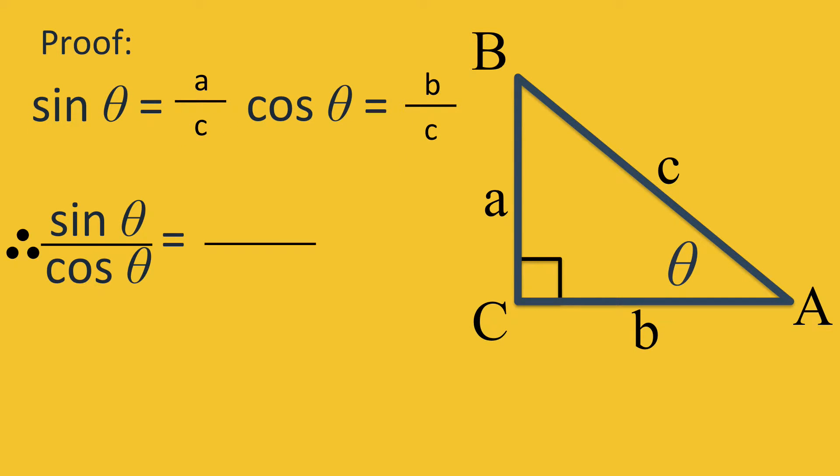Therefore, sine theta over cosine theta equals A over C divided by B over C. We can simplify by multiplying the first fraction by the reciprocal of the second fraction. Then we can cancel the C on top and C on the bottom to give A over B.